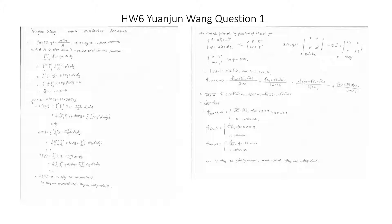Number five: prove or disprove that X² and Y² are independent. Because we know X and Y are jointly normal and uncorrelated, we know that X² and Y² are independent.